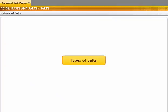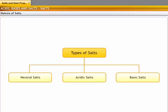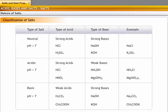Based on the strength of the reacting acid and the base, salts can be classified into three types. Salts formed from strong acids and strong bases are called neutral salts. They have a pH value of 7. Consider salts such as sodium chloride and potassium sulfate formed from strong acids like hydrochloric acid and sulfuric acid with strong bases like sodium hydroxide and potassium hydroxide.